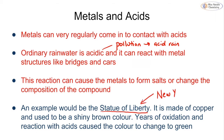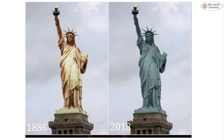A perfect example is the Statue of Liberty in New York, USA. Nowadays the Statue of Liberty is green, but when it was first given to the United States by France it was a shiny brown colour, because it's actually made of copper. Over the years, oxidation — reacting with oxygen — and the reaction with acids have caused the colour to change to green. This is an impression of what the Statue of Liberty would have looked like back in 1886.